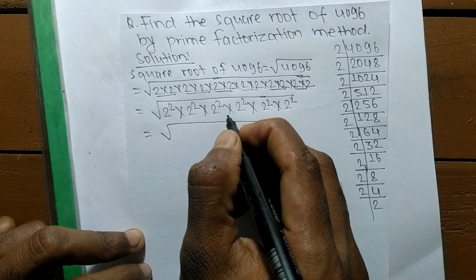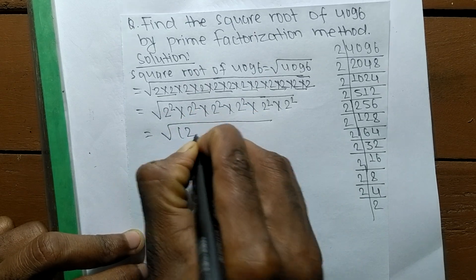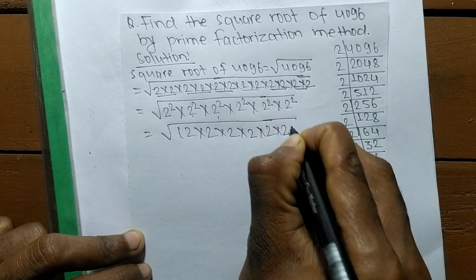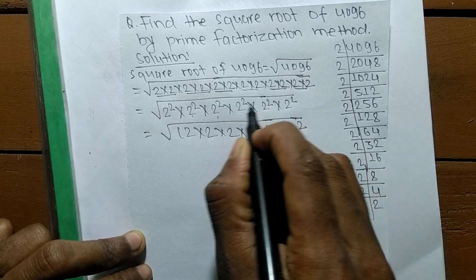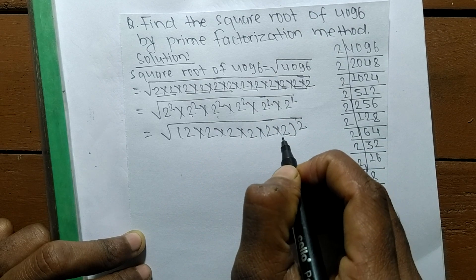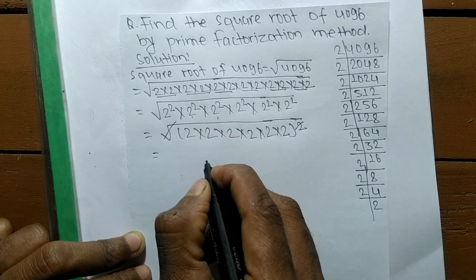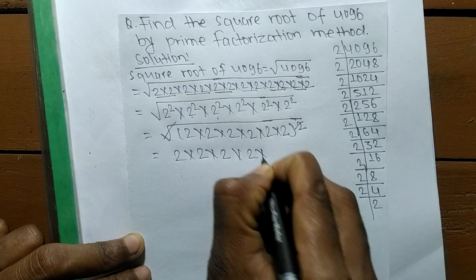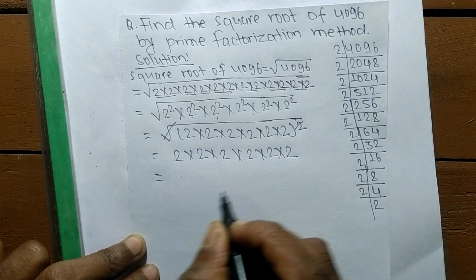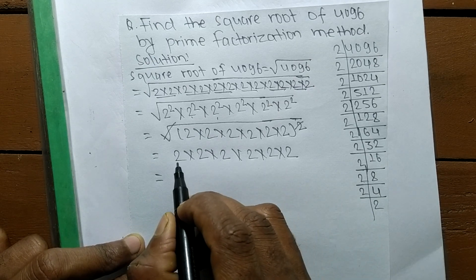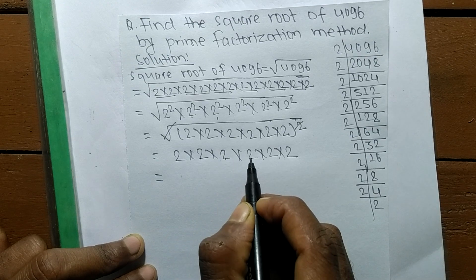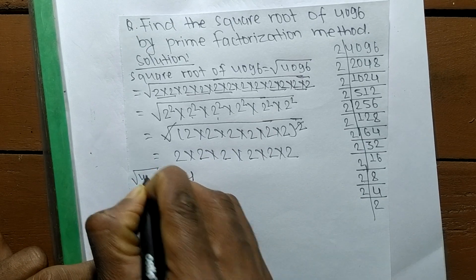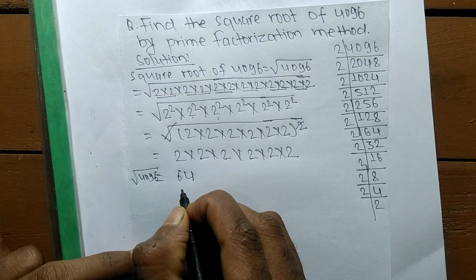All the numbers contain a square, so we can write them as 2 into 2 into 2 into 2 into 2 into 2, whole squared. The square and the square root cancel each other, so these numbers come out of the square root. Now we find the product: 2 times 2 is 4, times 2 is 8, times 2 is 16, times 2 is 32, times 2 is 64. So the square root of 4096 is 64.